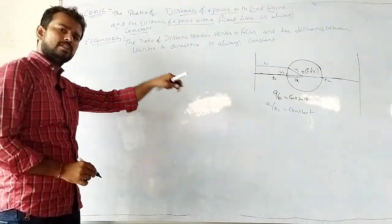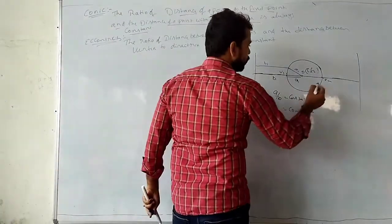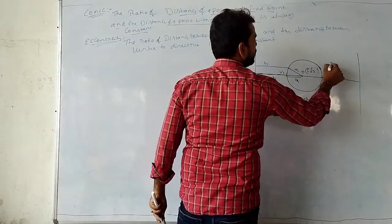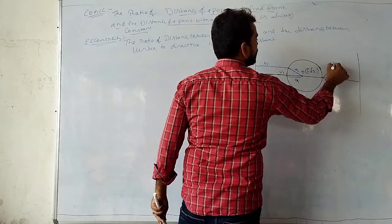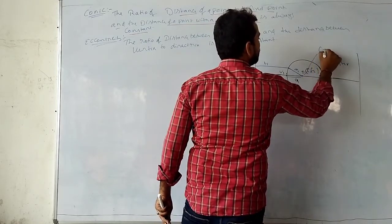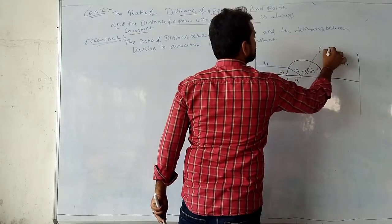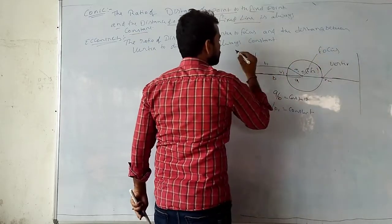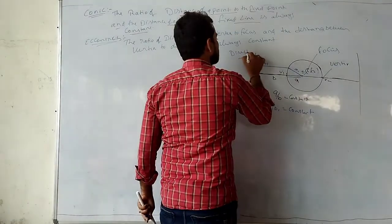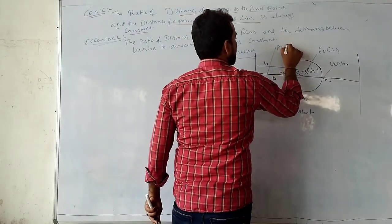A circle is also a type of conic. For this moving point I give the name vertex, for this fixed point the name focus, for this fixed straight line the name directrix, and for this line the name axis.